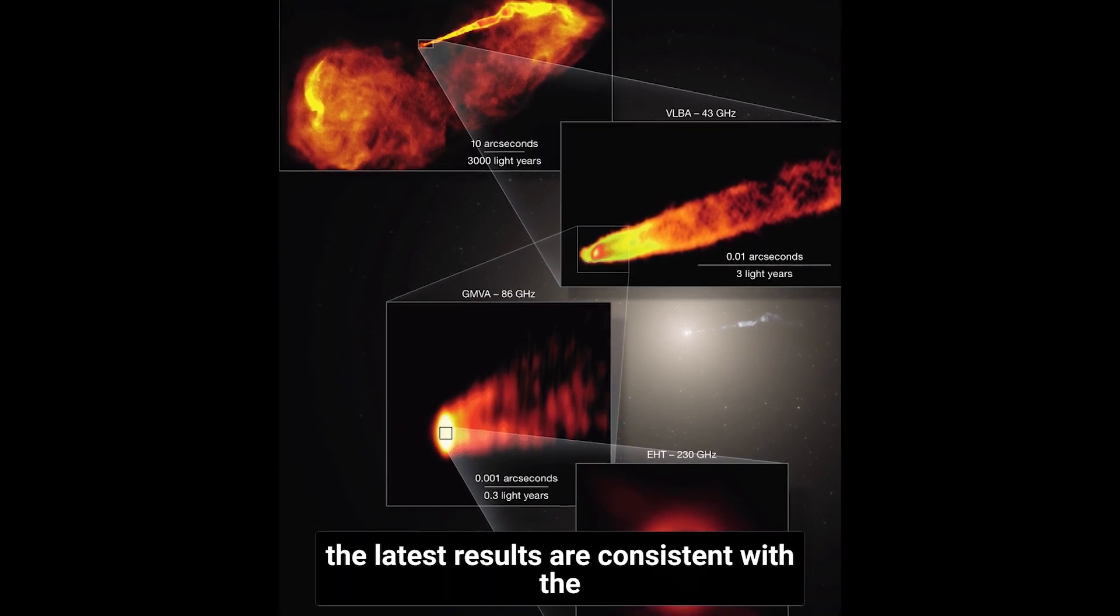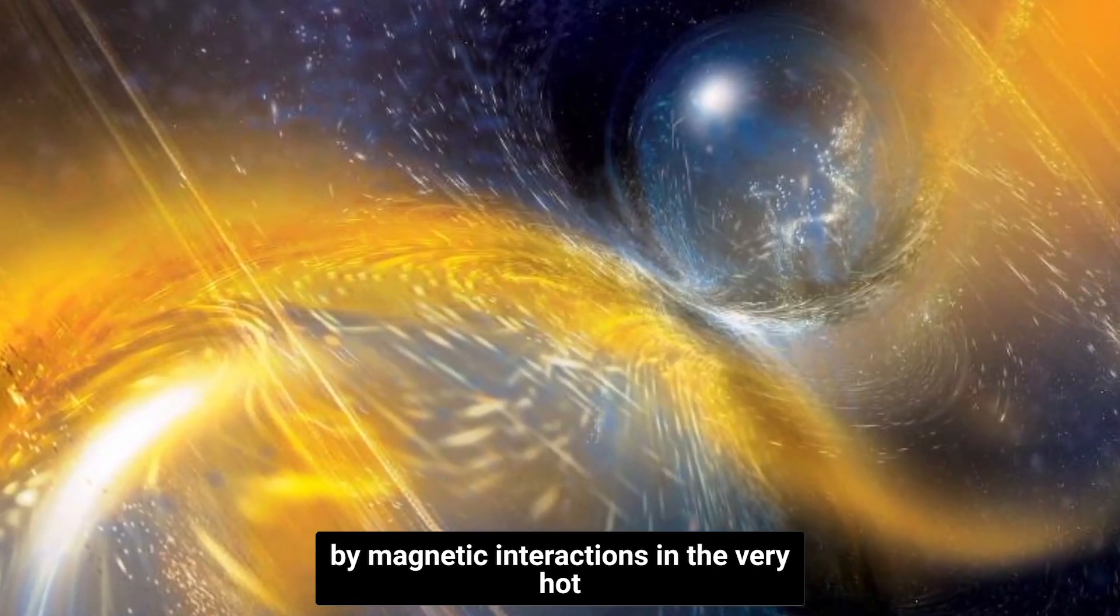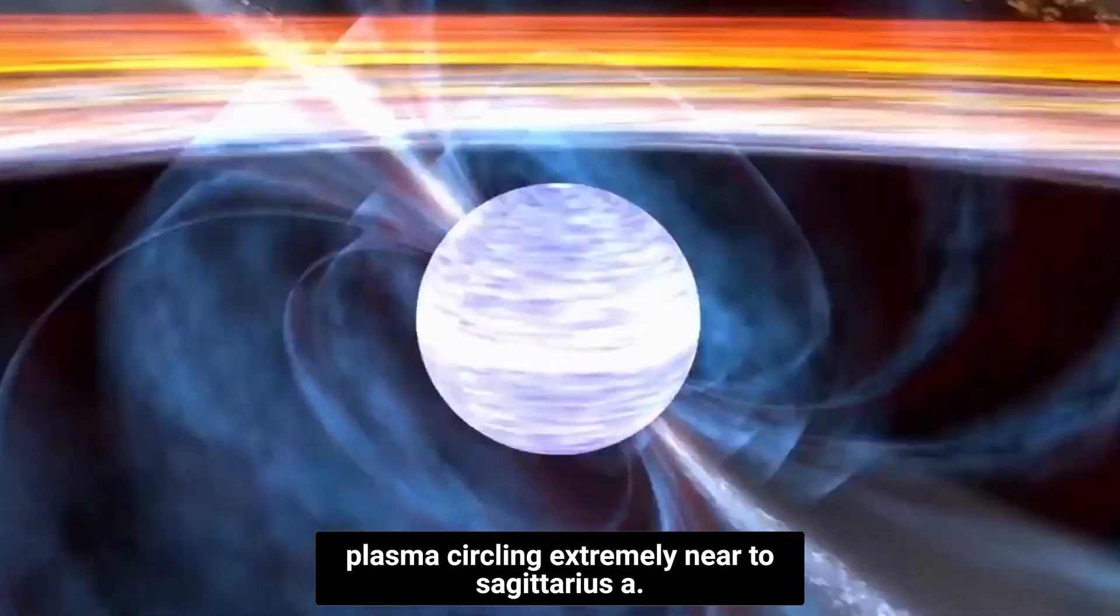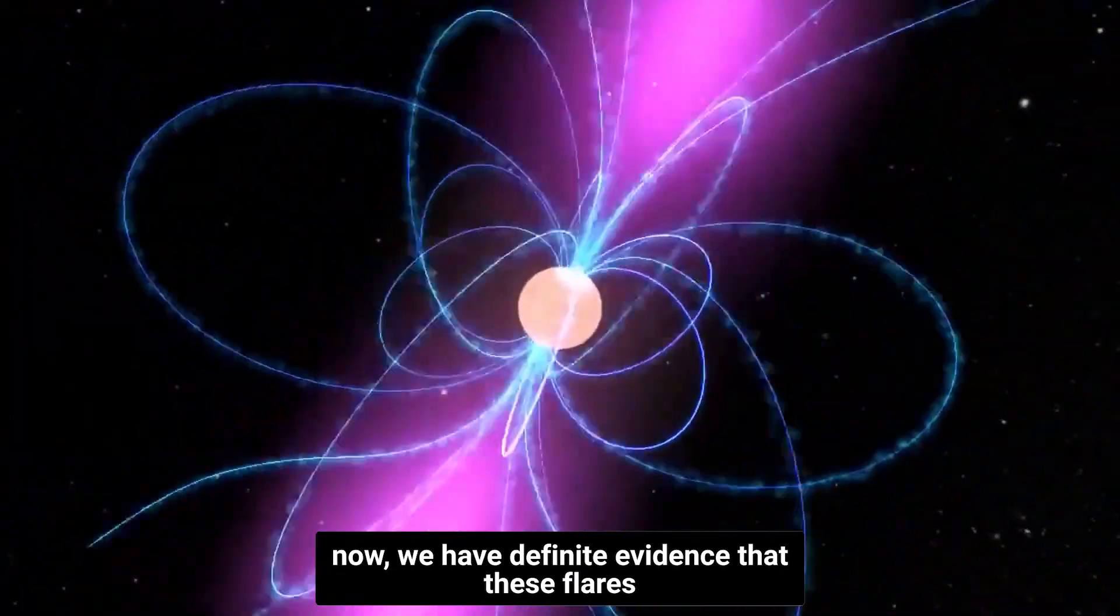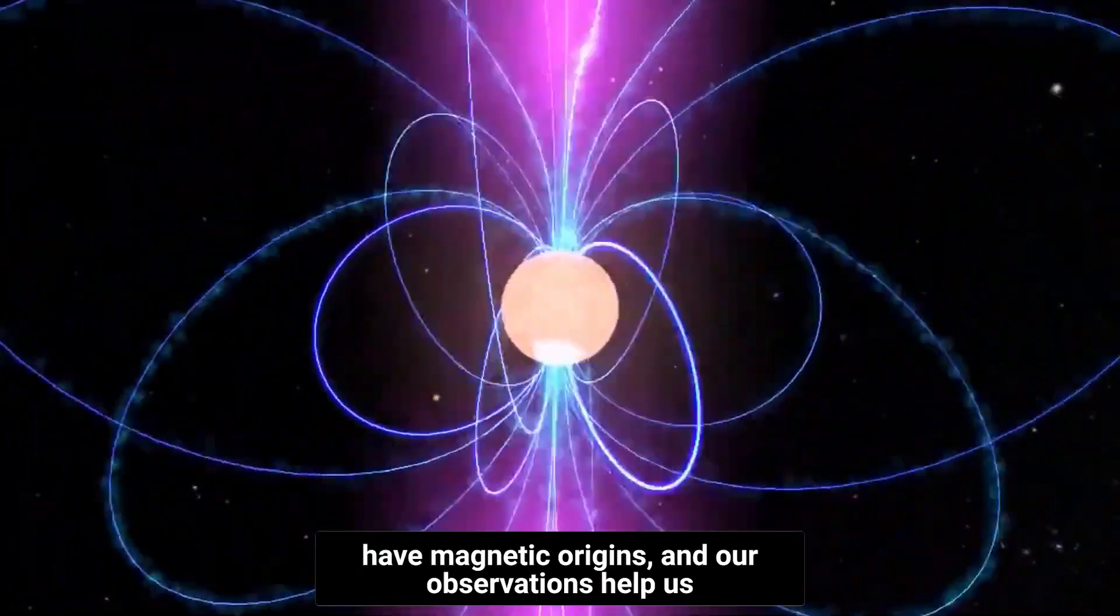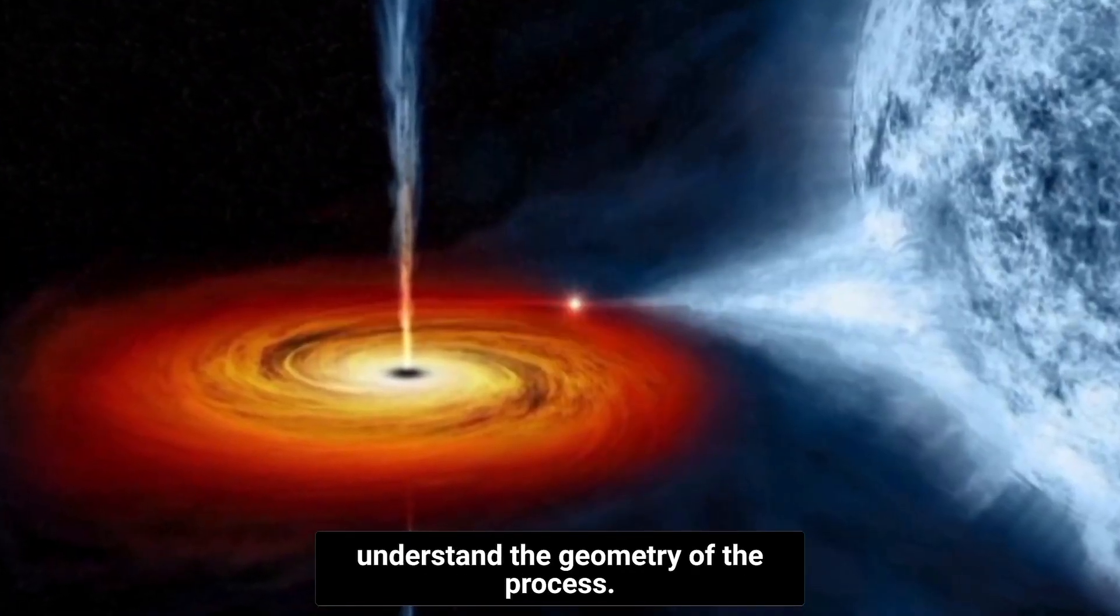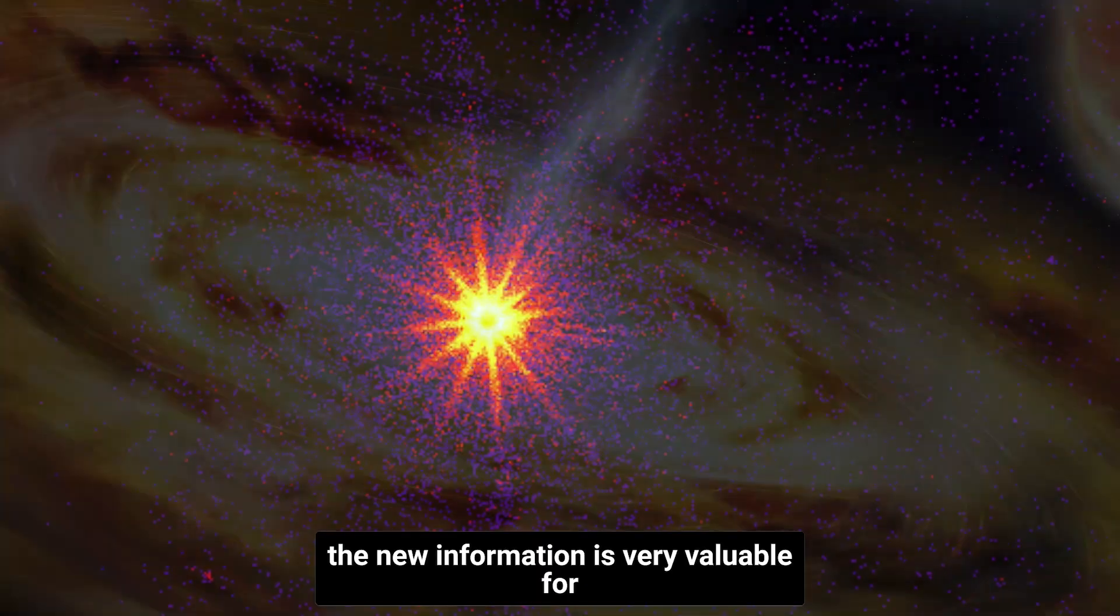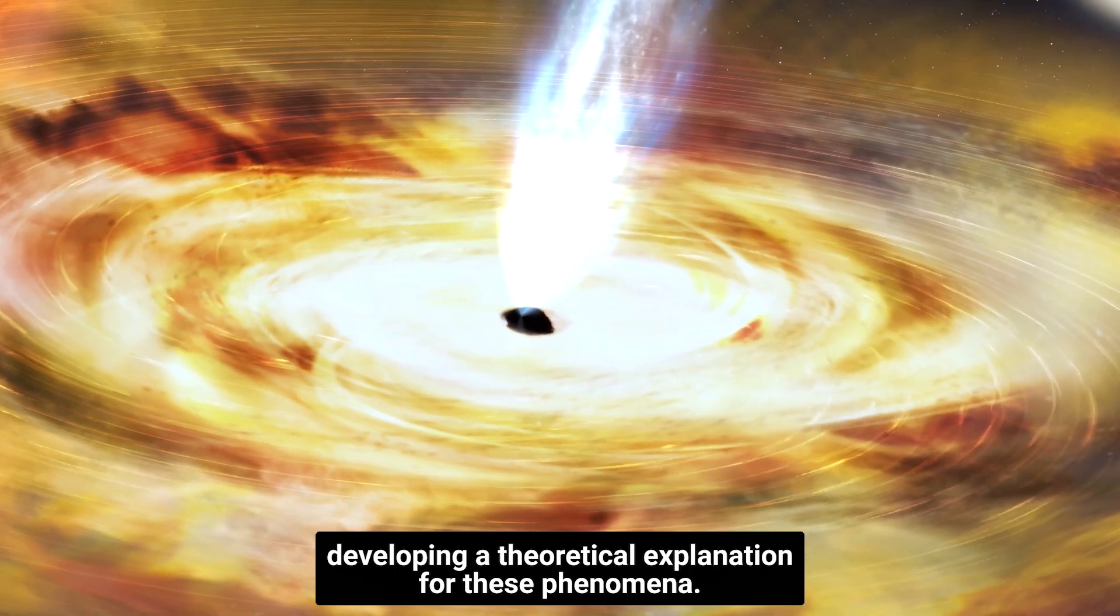The latest results are consistent with the long-held theory that the flares are caused by magnetic interactions in the very hot plasma circling extremely near to Sagittarius A. Now, we have definite evidence that these flares have magnetic origins and our observations help us understand the geometry of the process. The new information is very valuable for developing a theoretical explanation for these phenomena.